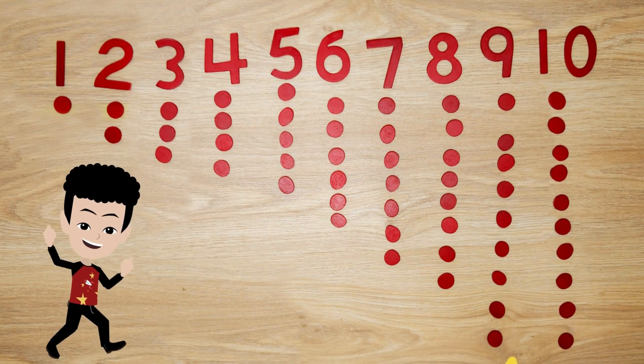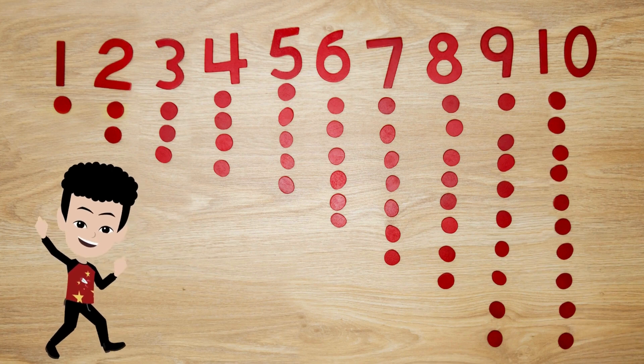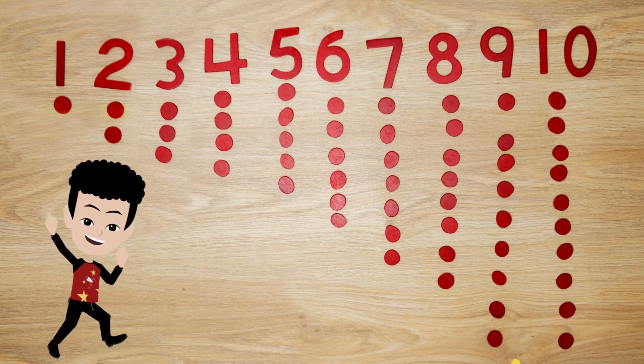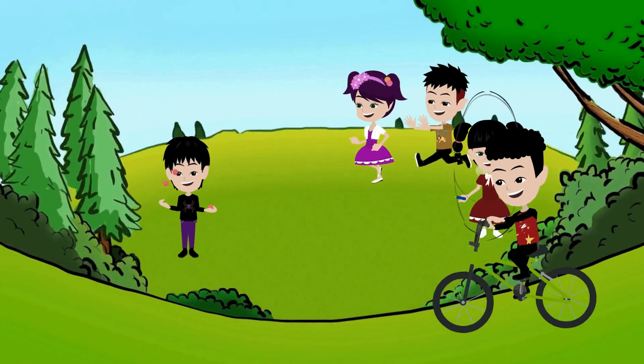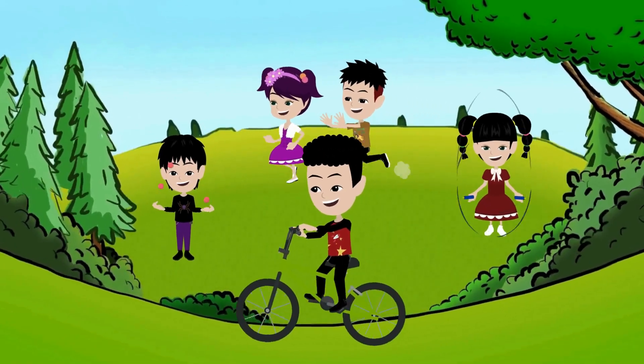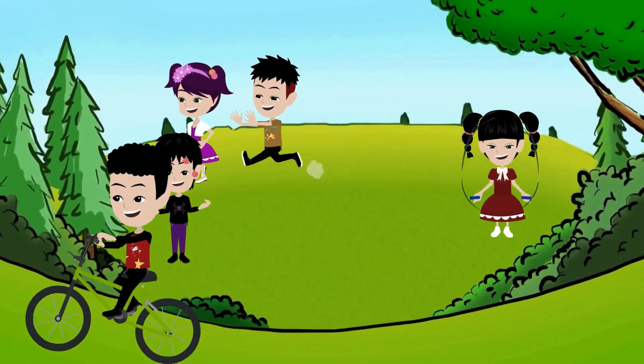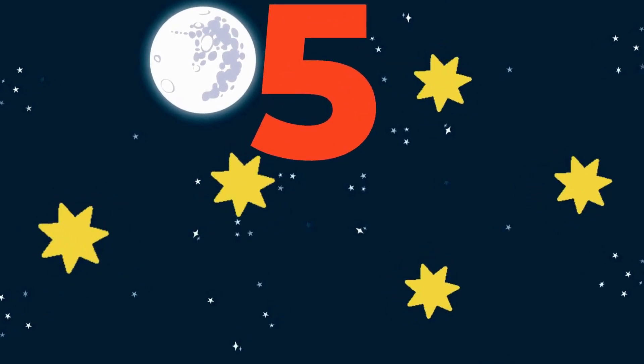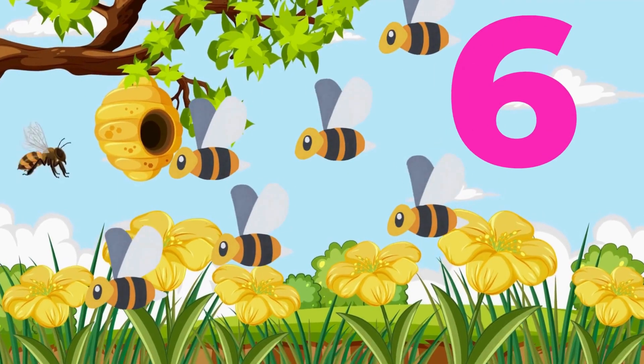Big or small, they're all the same. Let's count together, it's a joyful game. Five little stars twinkle in the night. Six buzzing bees take their flight.